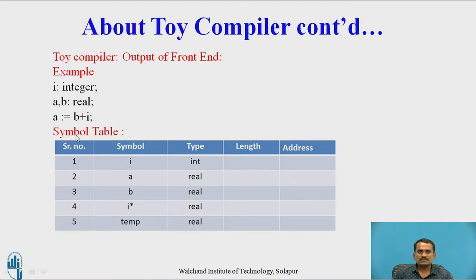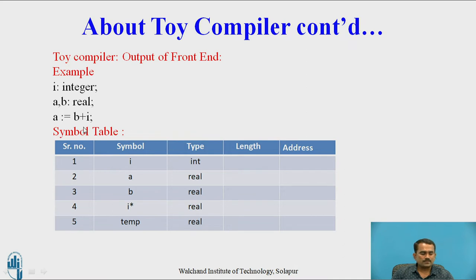Let us see the output of the front end based on a given example. We take the simple example: A equals B plus I. The given statement contains different identifiers — I is an integer and A and B are real variables. Now, how do we convert this into IC as well as IR? IR is an intermediate representation and IC is an intermediate code.